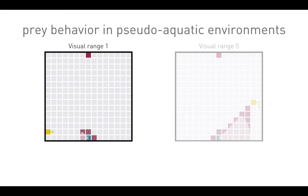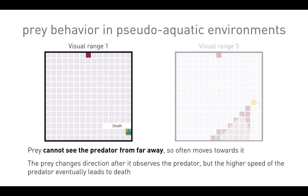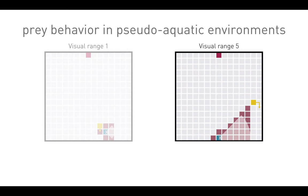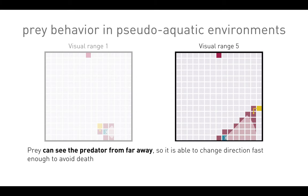Here is prey behavior in pseudo-aquatic environments with visual range 1. This is a representative trial from a dataset where we generate 20 random predator locations for each visual range. The prey cannot see the predator from far away, so it often moves towards it and suffers its demise. The prey changes direction after it observes a predator, but the higher speed of the predator eventually leads to death. At visual range 5, we see something different occasionally — the prey can see the predator from far away and is able to change direction fast enough to avoid death.